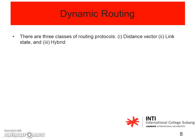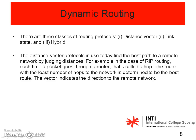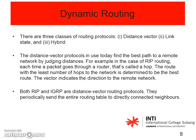There are three classes of routing protocols: distance vector, link state, and hybrid. Distance vector protocols find the best path to a remote network by judging distances. In the case of RIP, each time a packet goes through a router that is called a hop, and the route with the least number of hops is determined to be the best route. The vector indicates the direction to the remote network. Both RIP and IGRP are distance vector routing protocols — they periodically send the entire routing tables to directly connected neighbors. In dynamic routing we will learn how to send the entire routing table to all connected neighbors.